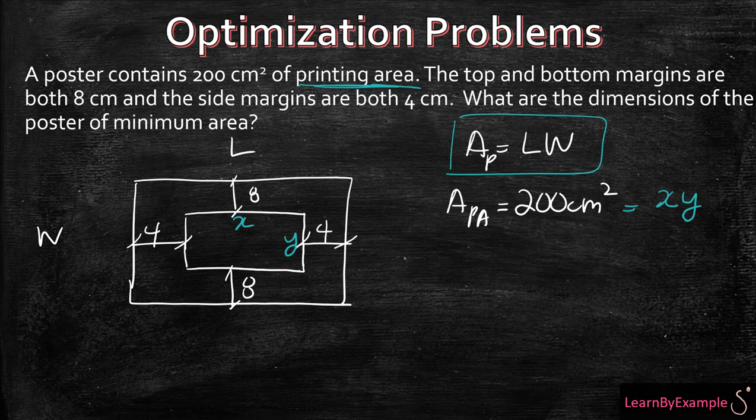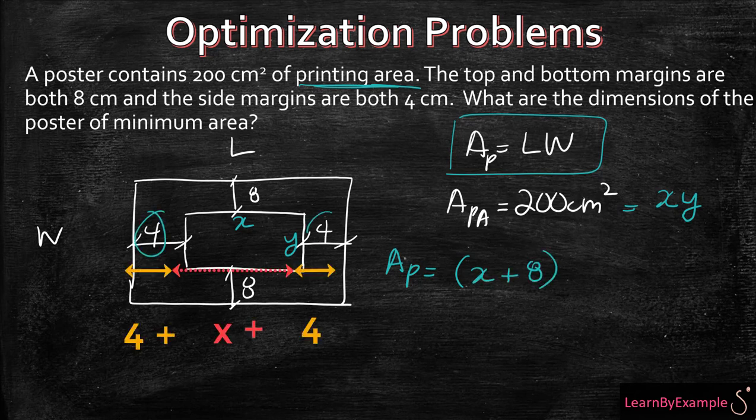So let's say we rearrange the area of the poster. Instead of saying things in length and width, since we don't have those variables, let's refer to them using the areas that we do have. So the length is still L, but instead of saying L now we can say X plus 8.